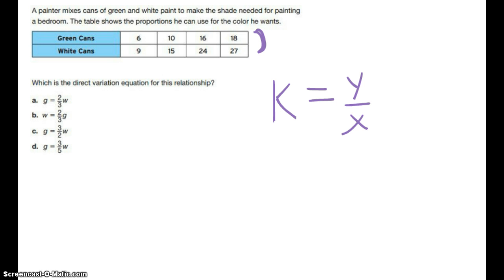Now, in this situation, we don't have an X and a Y. In our examples, or in our potential answers, we have G and W for green and white. So we need to figure out, using our answer choices, how do you get either from green to white or from white to green.